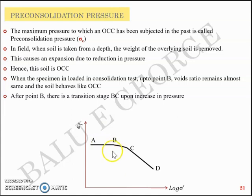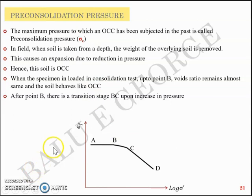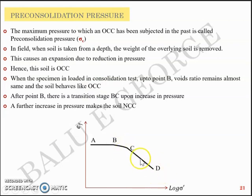At some point between B and C, or in that zone, lies the pre-consolidation pressure sigma c. In short, a further increase in pressure will make the soil a normally consolidated clay and it will trace the path C-D.